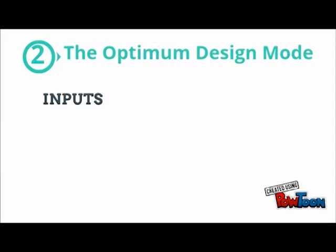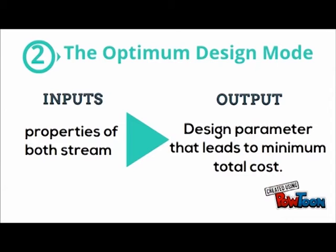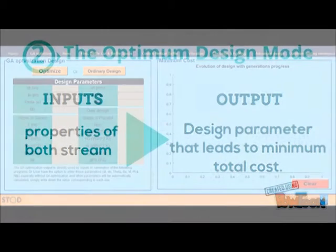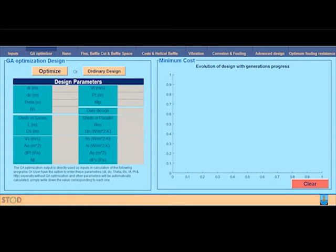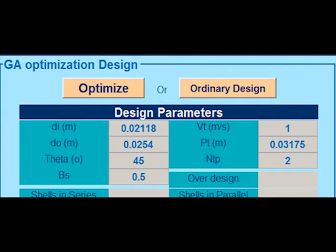For the second mode to be used, the designer should put some extra inputs, like the number of generations, the number of chromosomes, the number of trials, the maximum crane lift, and the maximum available length.